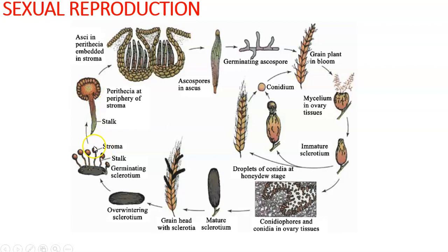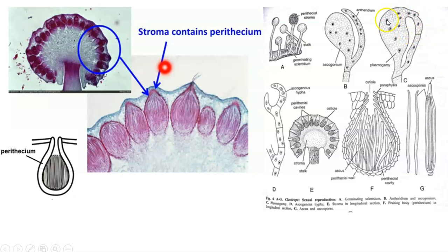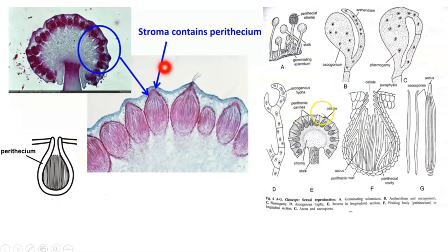Zooming into the head of the stroma, you can see multiple cavities — these are perithecia. Within each perithecium there will be formation of asci, and within each ascus, ascospores. The perithecia contain the male and female reproductive organs — antheridium and ascogonium. During sexual reproduction, fusion occurs via the trichogyne: nuclei from the antheridium transfer to the ascogonium, both being multi-nucleate, forming dikaryotic hyphae — the dikaryon stage.